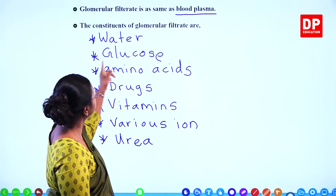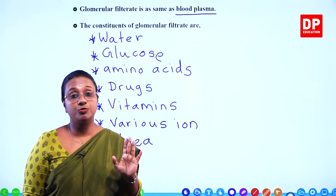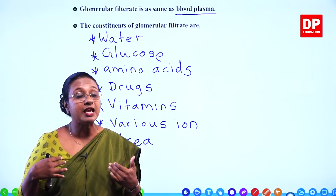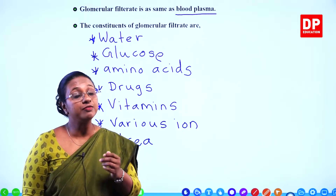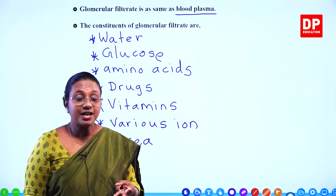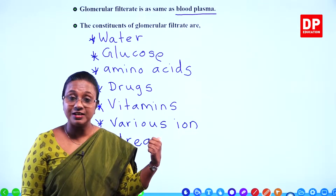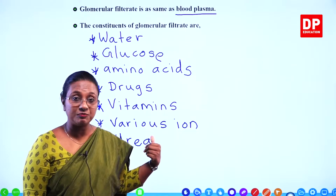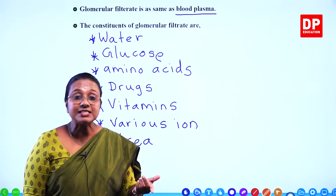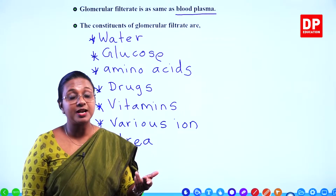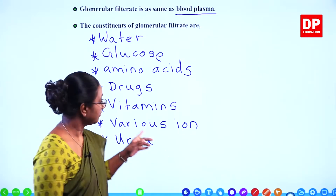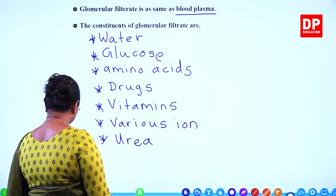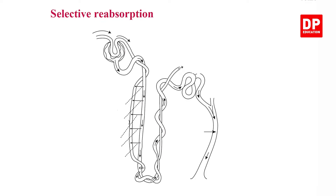In a healthy person, glucose cannot be excreted with urine, so all these substances have to be reabsorbed by the body — that is the second process of urine production. We discussed there are three processes: the first was ultrafiltration, and now we move to the second stage — selective reabsorption.